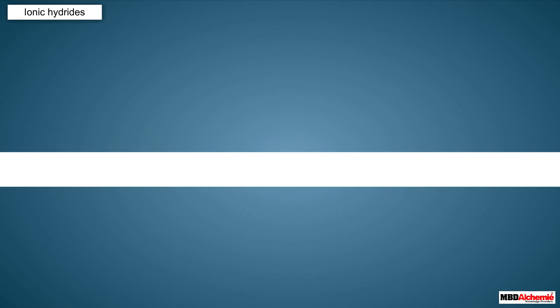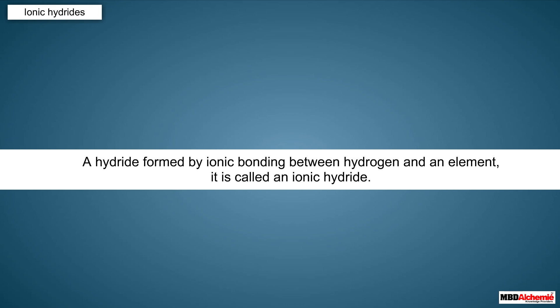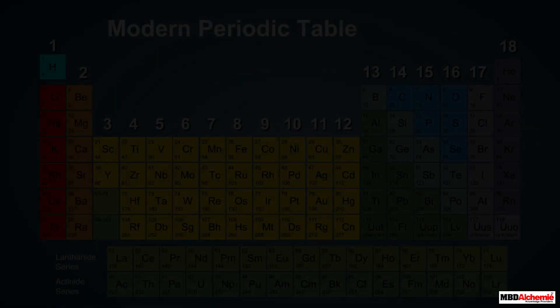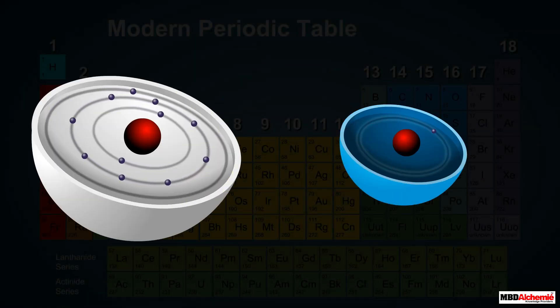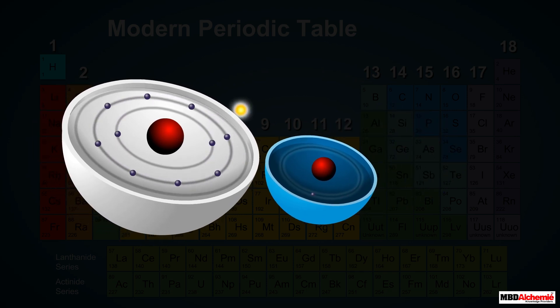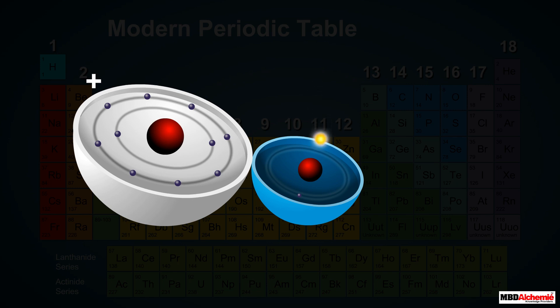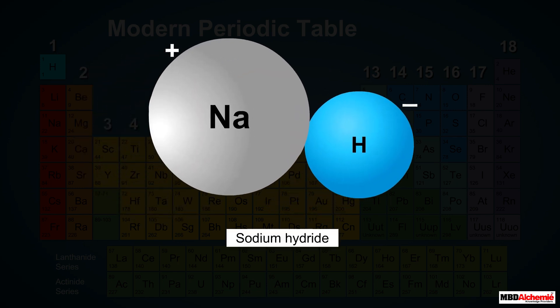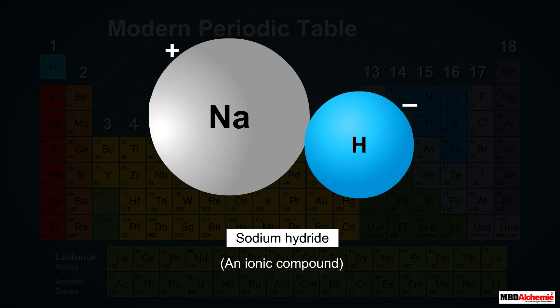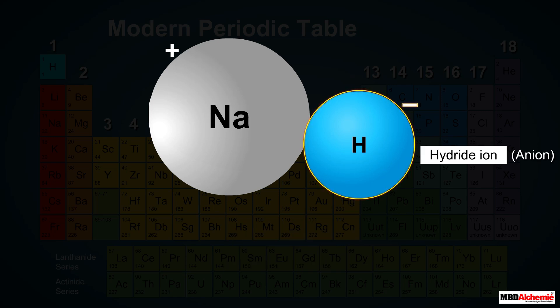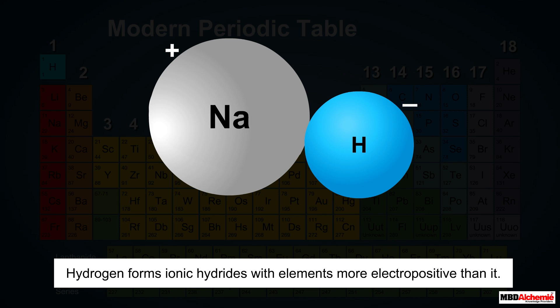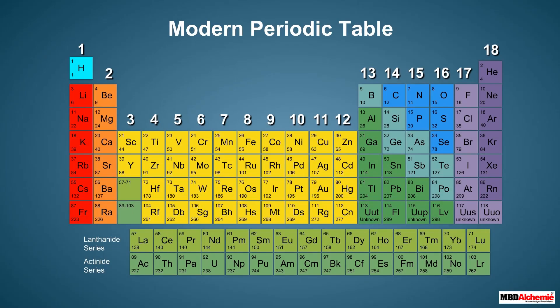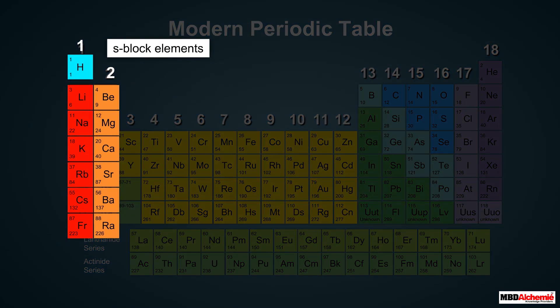If a hydride is formed by ionic bonding between hydrogen and an element, it is called an ionic hydride. For example, when sodium and hydrogen combine, an ionic bond is formed by the transfer of an electron from a sodium atom to a hydrogen atom, making sodium hydride ionic. In an ionic hydride, hydrogen occurs as a hydride ion, that is an anion. Thus hydrogen forms ionic hydrides with elements more electropositive than it — mostly group 1 and group 2 elements, or s-block elements.